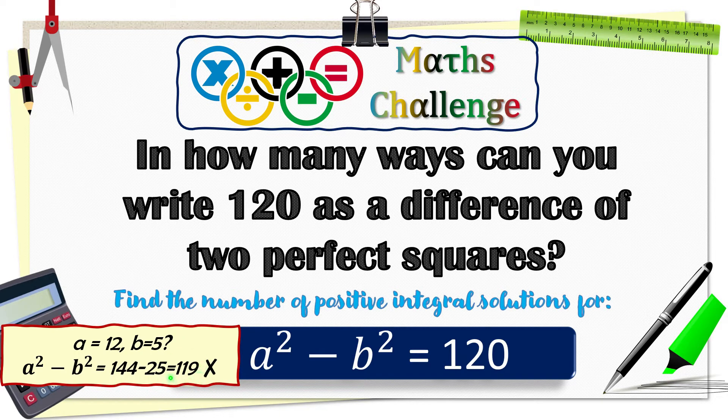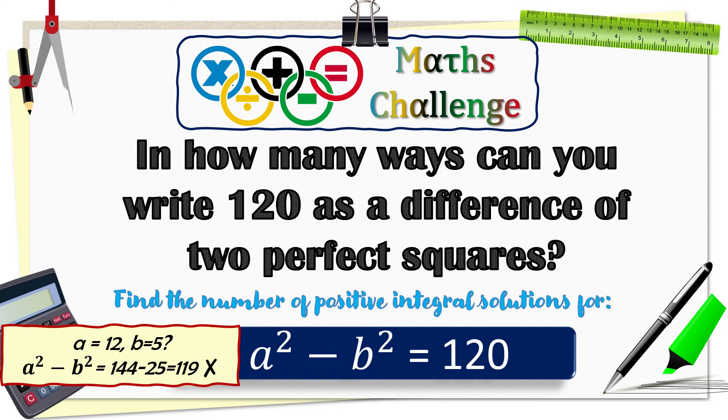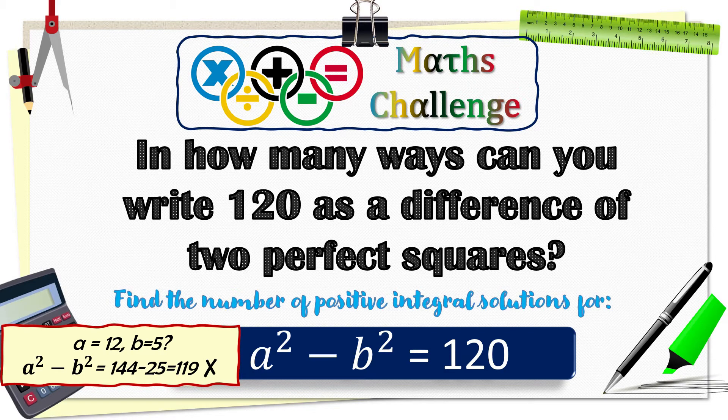Not 120. So a is equal to 12, b is equal to 5 is close but does not satisfy the equation. It is not a solution.